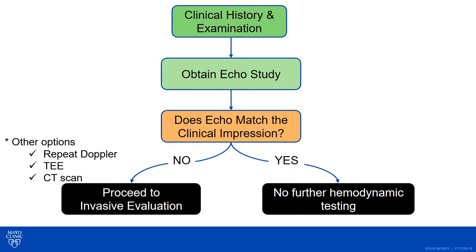Historically, discordance has meant proceeding to invasive evaluation. It's never wrong to send the patient back for a repeat Doppler study, particularly if the echocardiogram didn't adequately assess the aortic valve from multiple windows. TEE can be helpful in some patients, although the angles to assess the gradient are often not as readily obtained transesophageally. CT scanning also has a role — the higher the calcium score of the aortic valve, the more likely it is severe aortic stenosis. The key point: if your echo and clinical impression match, you don't need additional testing.